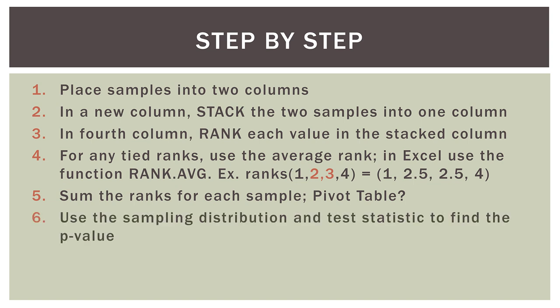Then we use the sampling distribution and test statistic to find the p-value. This is the same thing we did earlier in statistics — finding test statistics and looking at the normal distribution table or z-score table to find the p-value. Then we compare that p-value to our chosen alpha level, which in most cases is 0.05.